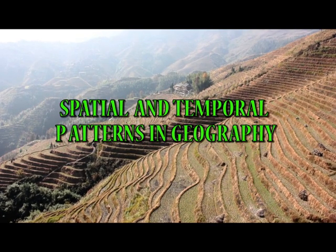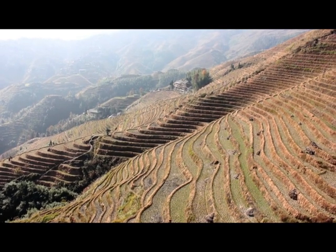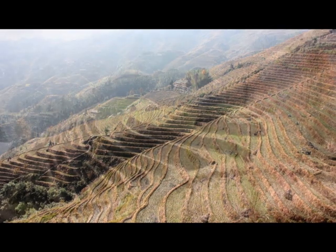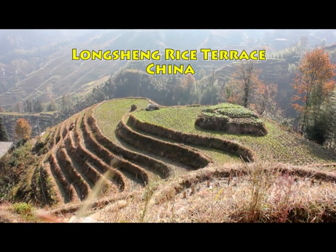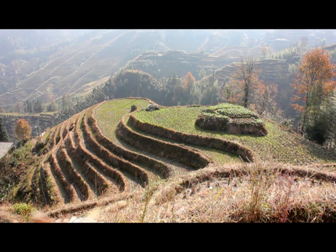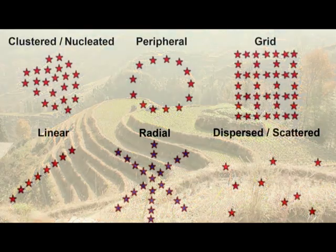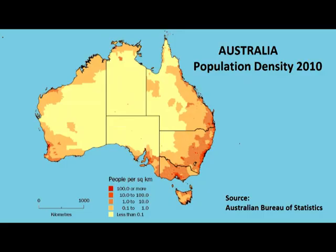The natural and cultural features that exist on the Earth's surface and the activities that occur there are collectively known in geography as phenomena. The location and distribution of such phenomena can cause both spatial and temporal patterns. Such patterns can be mapped.